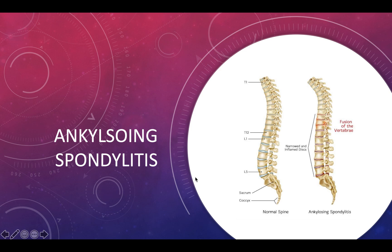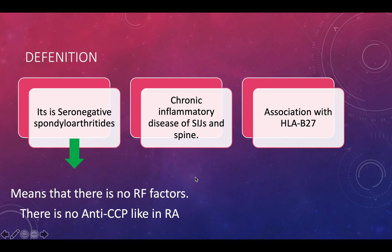In this video we're going to be talking about ankylosing spondylitis, a type of seronegative polyarthritis. It is a seronegative spondyloarthritis. Seronegative means that there is no rheumatoid factor present in the blood, and there is likewise no anti-CCP like in rheumatoid arthritis.